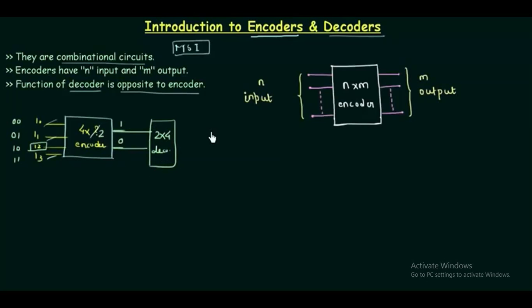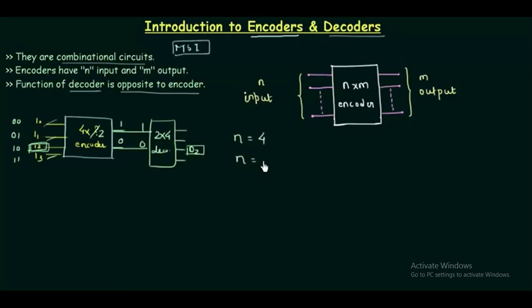If I2 is high, instead of sending all 4 lines, we send 2 lines: the output is 1 0, which in binary equals 2, confirming it is O2. So we were having I2 high and at the decoder end we again get O2. The relation between inputs and outputs is N = 2 to the power M, where N is the number of inputs and M is the number of output lines.